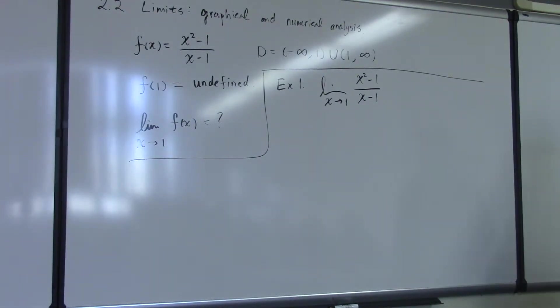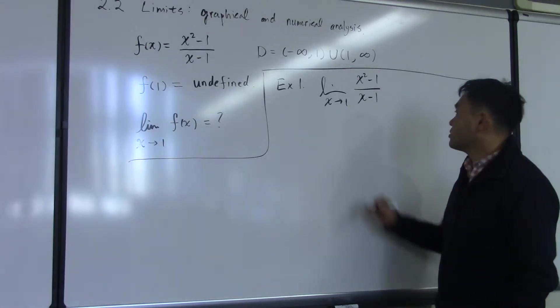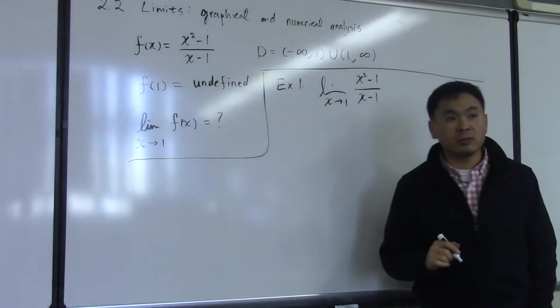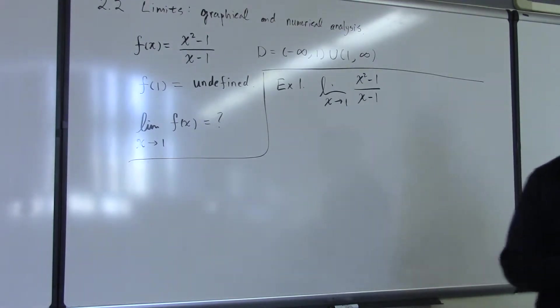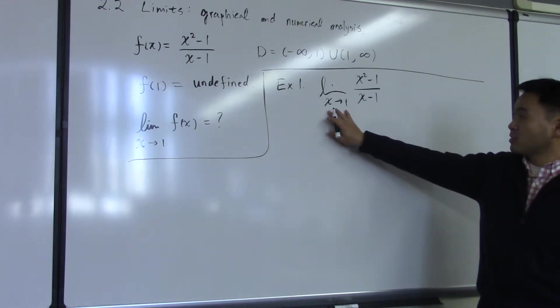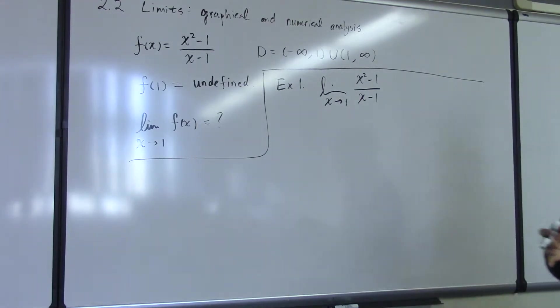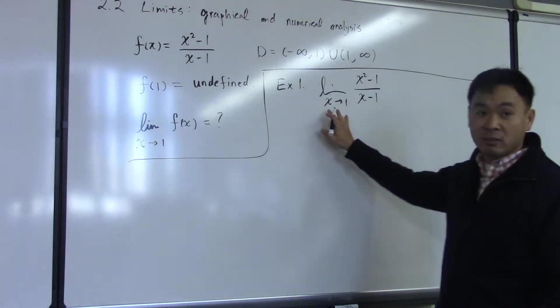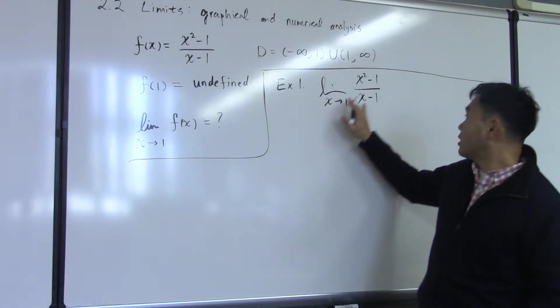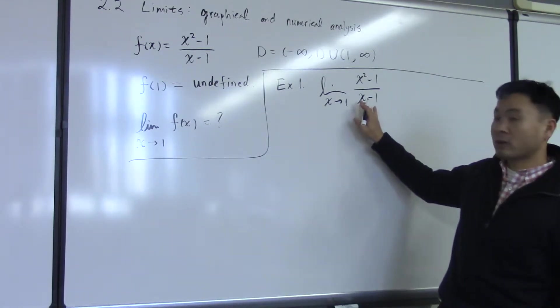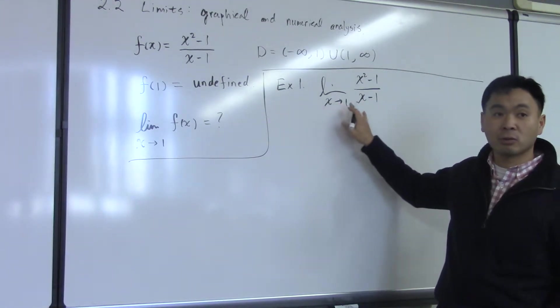We can think about this limit in two different ways. One numerically and one graphically. Although I didn't fully explain what this symbol limit means, if you see these examples, you'll understand what I mean when I say limit of x squared minus 1 over x minus 1 as x goes to 1.